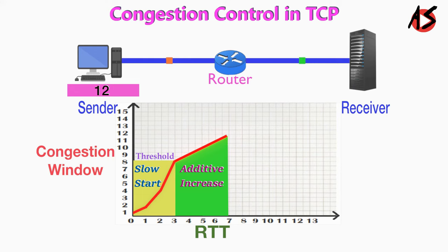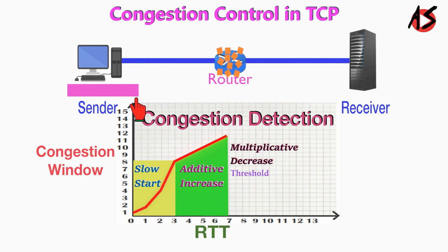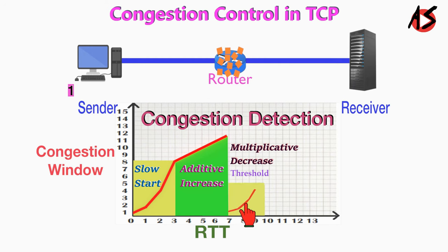Now suppose at window size twelve, the sender sends segments and does not get acknowledgments until the RTO timer times out. The sender can infer that congestion has occurred. In this congestion detection phase, the size of the threshold is dropped to half — that is six here — which is known as multiplicative decrease. It also reduces the congestion window back to one segment and starts the slow start phase again.